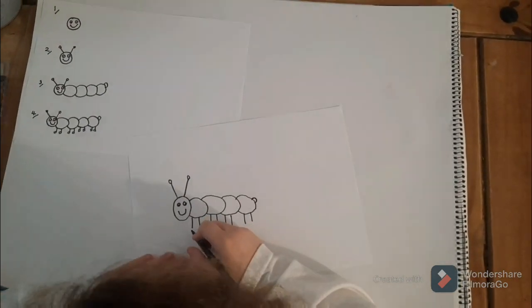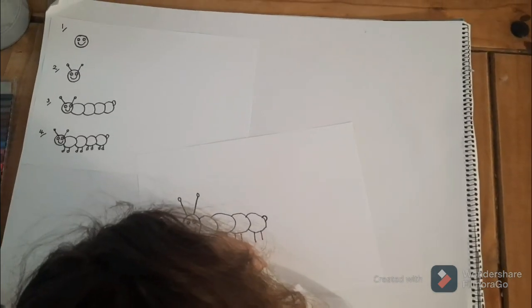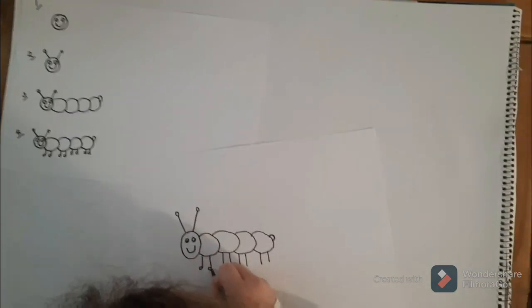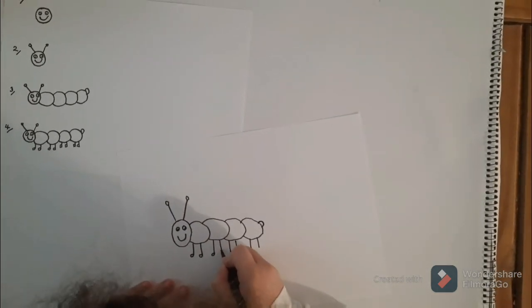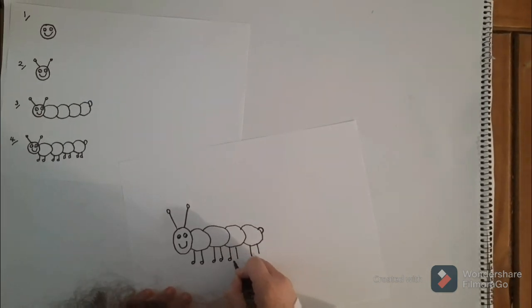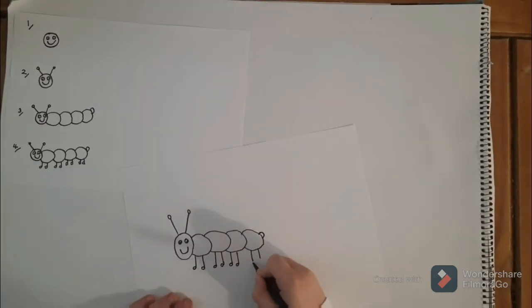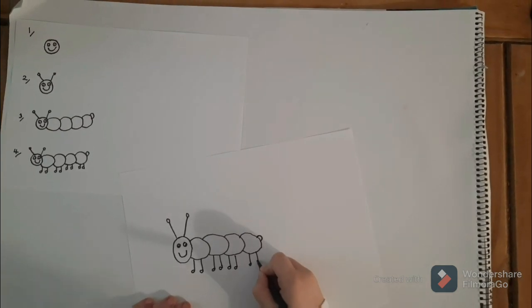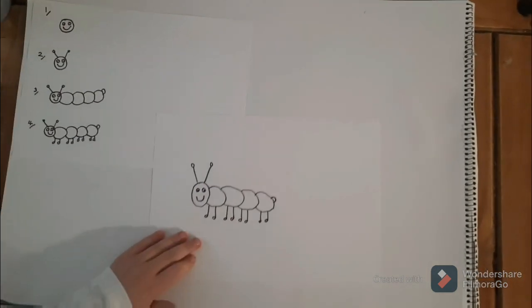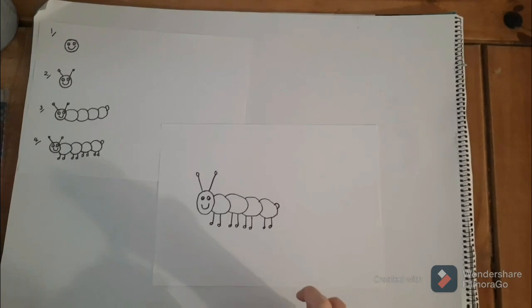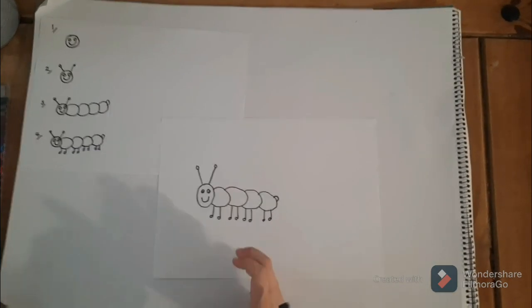And then, it looks like there's little circles attached to them. So, one circle, two circle, three circle, four circle, five circle, six circle, seven circle, eight circle. And there is our caterpillar body. And now, we are going to color it in.